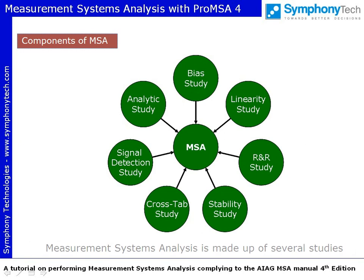MSA is made up of several studies. Each study establishes the source and the extent of measurement system variation. Once the source of measurement variation is identified, you can take effective actions to correct the situation. Explore through the studies to understand them and to learn how to interpret the results.